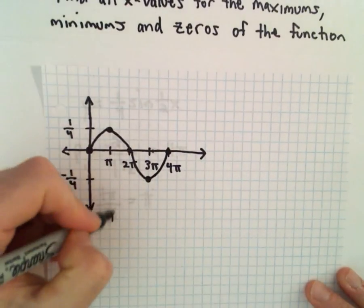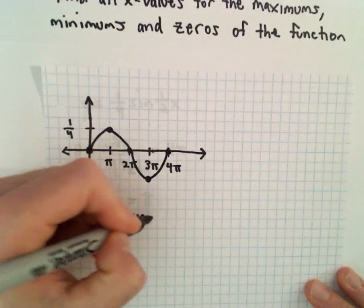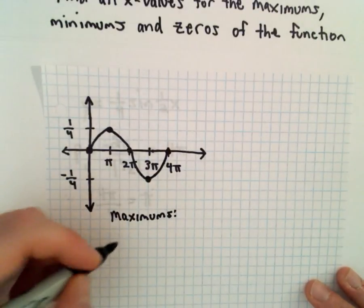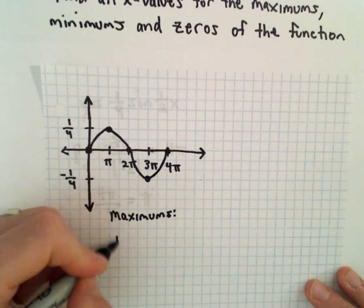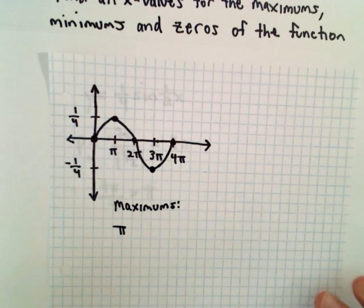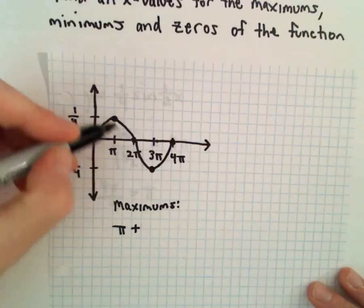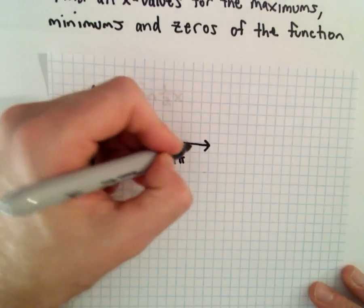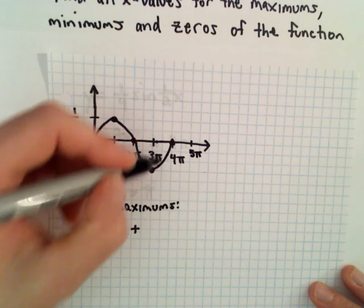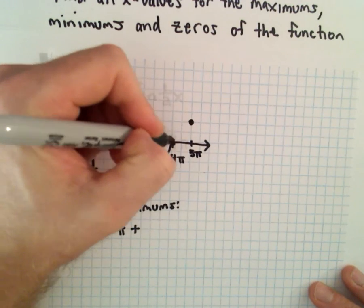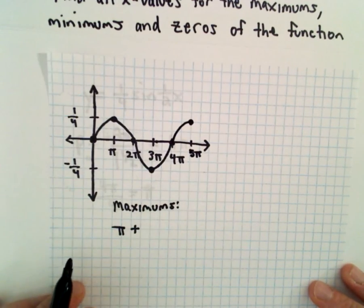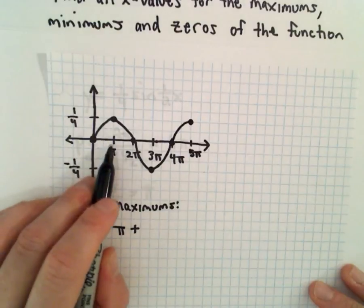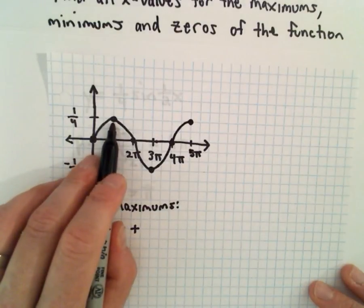So to get the maximums, the maximums are going to occur at the x-coordinate of pi. But then what we can do is, every time we complete one full period, so here's five pi, once we complete one full period, we're going to be back at the maximum.